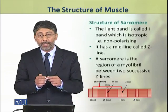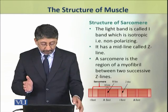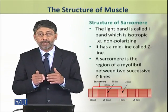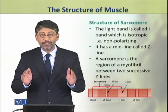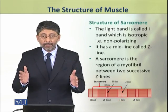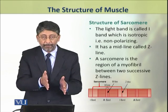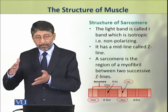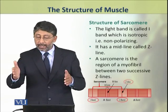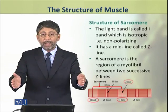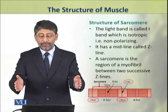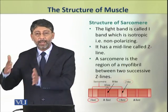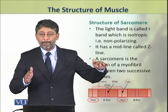Sarcomere میں جو light band ہے اسے I band کہتے ہیں۔ This band is isotropic, that is it does not polarize visible light. اس light band میں center میں there is a mid line which is called the Z line. ایک sarcomere ایک Z line سے شروع ہوتا ہے اور دوسری Z line پر end ہوتا ہے — دو successive Z lines کے درمیان کے portion کو ہم ایک sarcomere کہتے ہیں۔ مختلف sarcomeres ایک دوسرے کے ساتھ attach ہوتے ہیں اور ایک لمبا myofibril بناتے ہیں۔